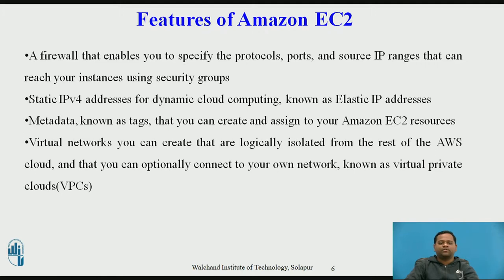A few more features: a firewall that enables you to specify the protocols, ports, and source IP ranges that can reach your instances, using security groups. Static IPv4 addresses for dynamic cloud computing known as elastic IP addresses. Metadata known as tags that you can create and assign to your Amazon EC2 resources. You can also create virtual networks that are logically isolated from the rest of the AWS cloud, and optionally connect to your own network — known as a Virtual Private Cloud (VPC).